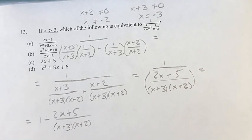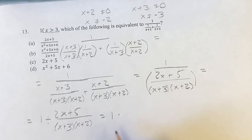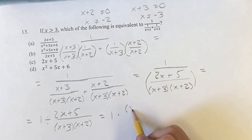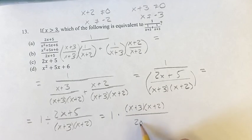If we want to have it multiplied, then you just have to flip the numerator and the denominator. So this is equal to 1 times the flipped version of this. So x plus 3 times x plus 2 over 2x plus 5.